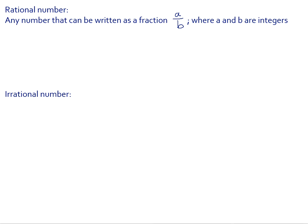A rational number is any number that you can rewrite as a fraction. That fraction is a number over a number, a over b, but a must be an integer and b must be an integer. So it's any number that can be written as an integer divided by an integer. For example, a quarter is a rational number — one is an integer, four is an integer.